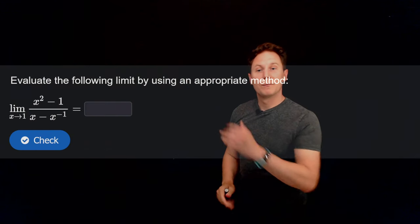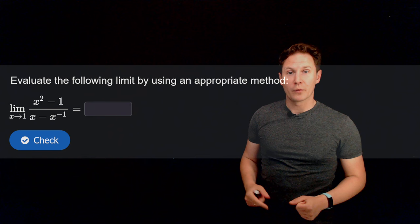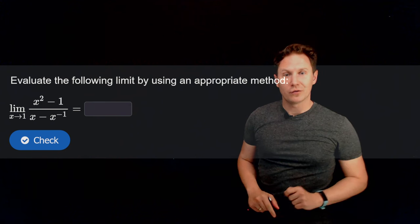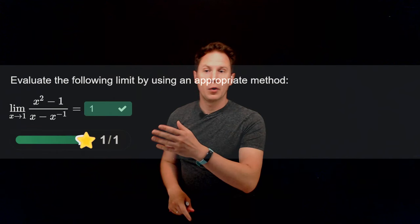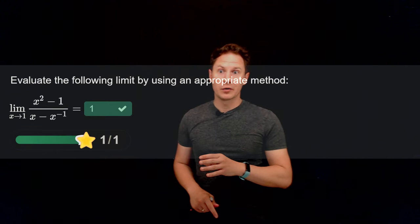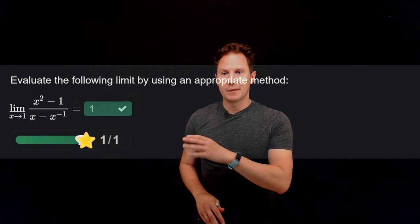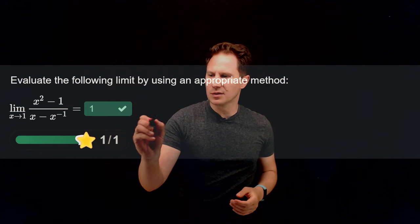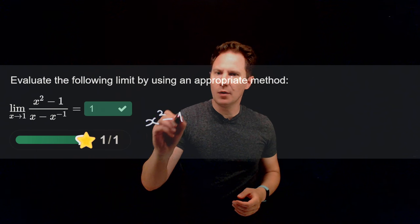Try to evaluate the limit by using the appropriate method, pause the video and input your answer in the box. I hope you paused it and realized that again plugging in x equals 1 gives you 0 over 0, there are no square roots, and also there is this x to the negative 1 there, so let's try to combine those factors in the denominator,